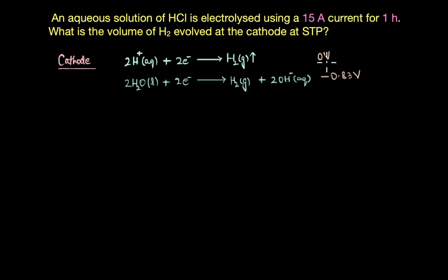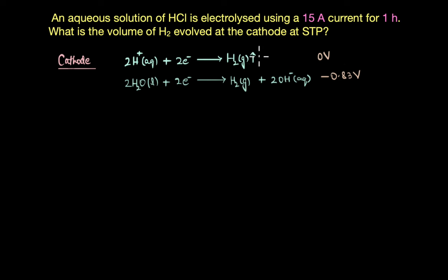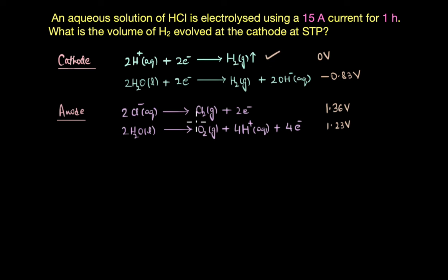The electrode potential for H⁺ reduction is 0 volts, whereas for the reduction of water it is −0.83 volts. The reaction with the greater electrode potential is preferred, so at the cathode, reduction of hydrogen ions is preferred. Similarly, at the anode there are two competing reactions: oxidation of chloride ions to form chlorine gas, and oxidation of water to form oxygen gas.